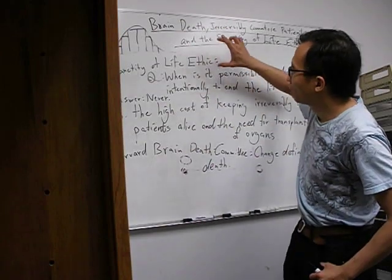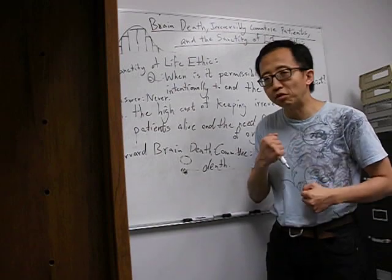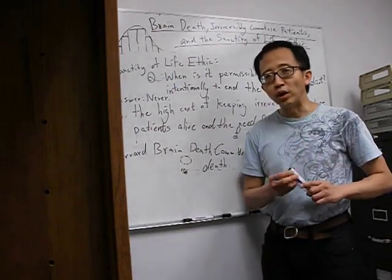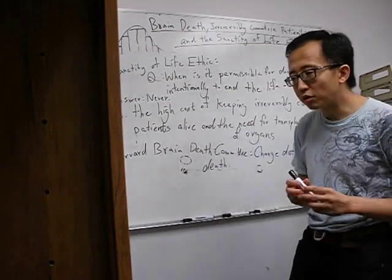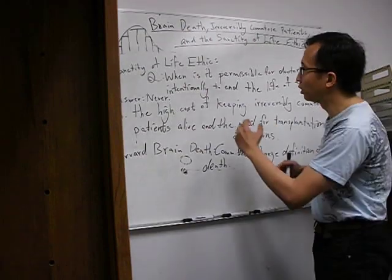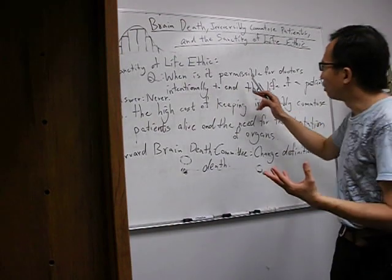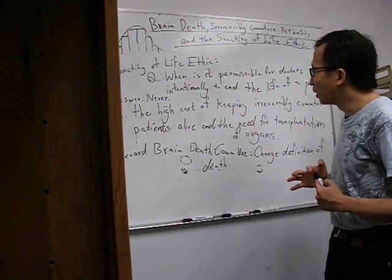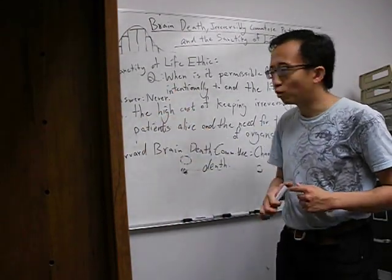First, the sanctity of life ethic. Briefly speaking, the sanctity of life ethic holds that it is always wrong to intentionally end a human life. So you can understand the sanctity of life ethic best if you think about it in terms of answering this question: when is it permissible for doctors intentionally to end the life of a patient? The answer given by the sanctity of life ethic would be never.